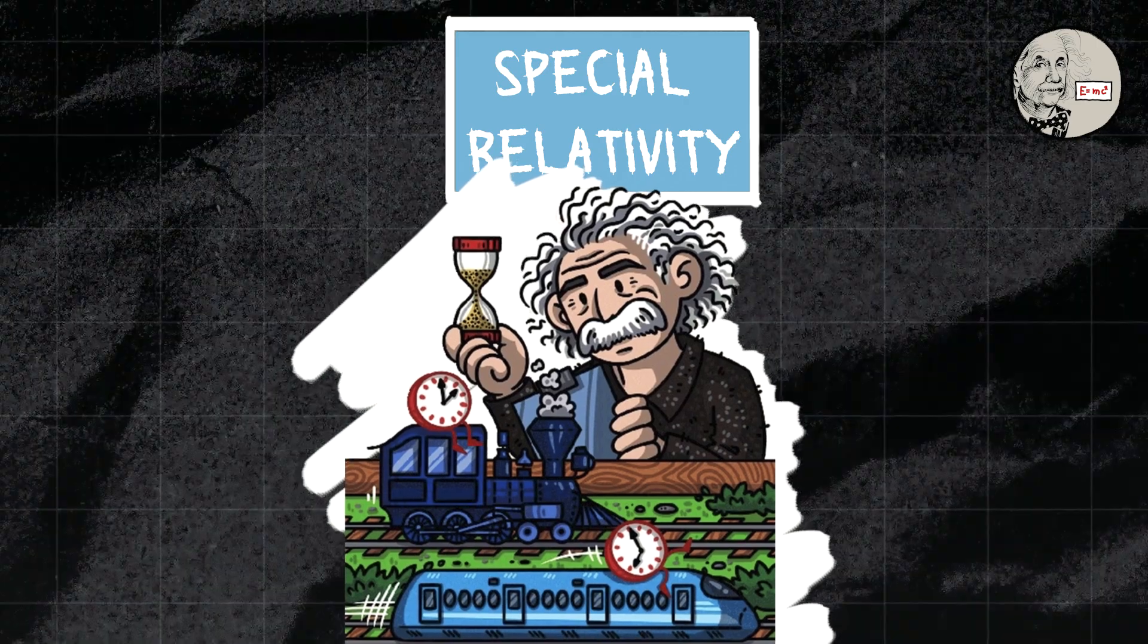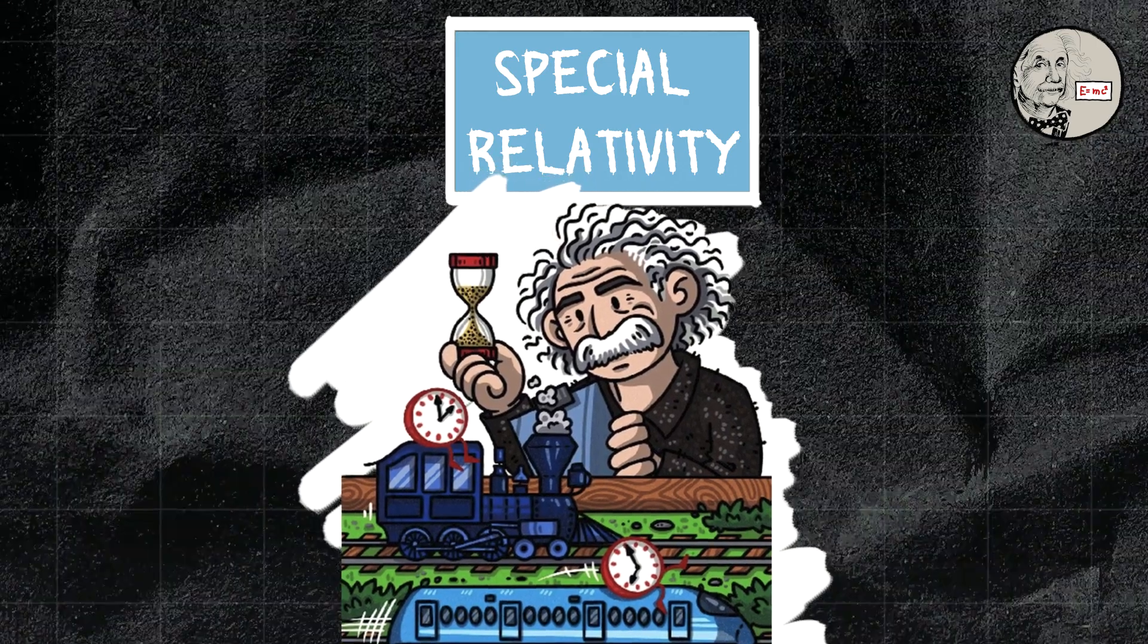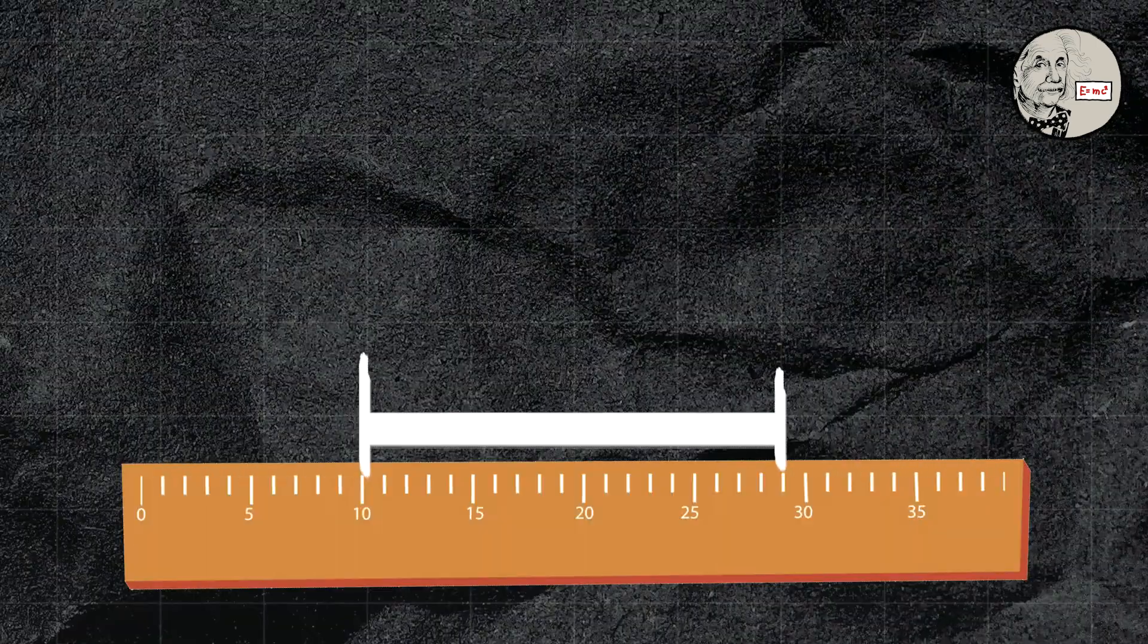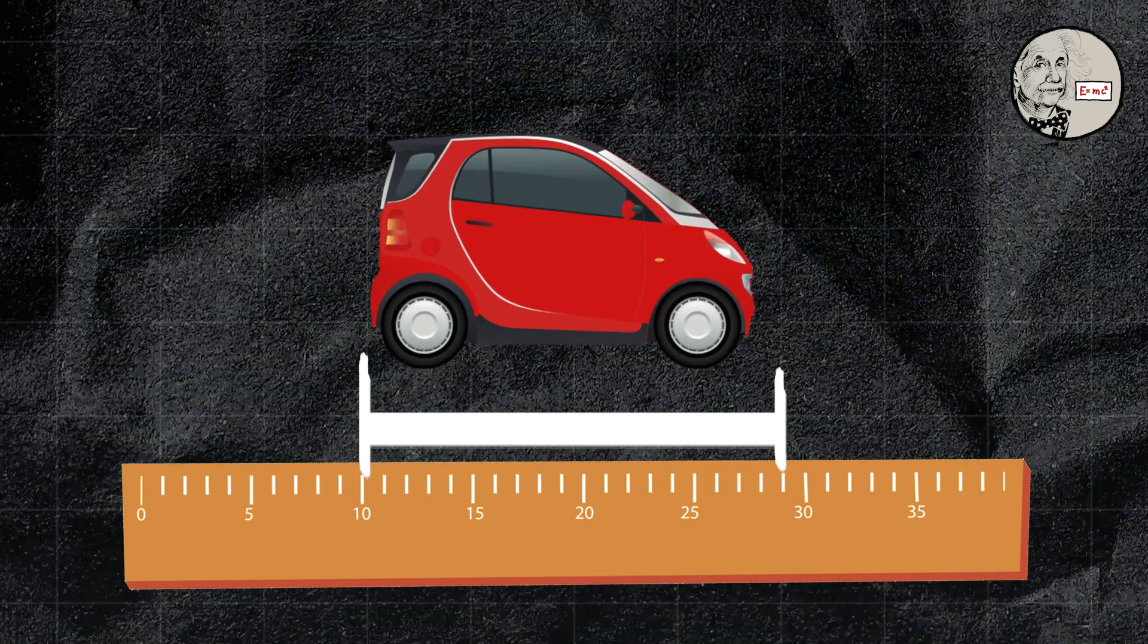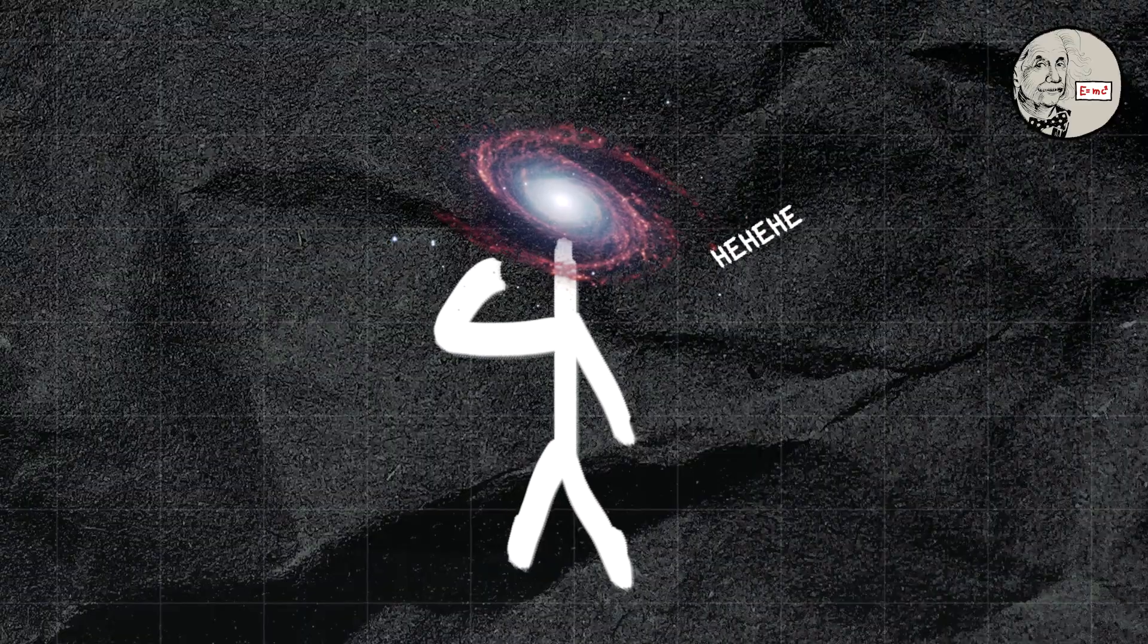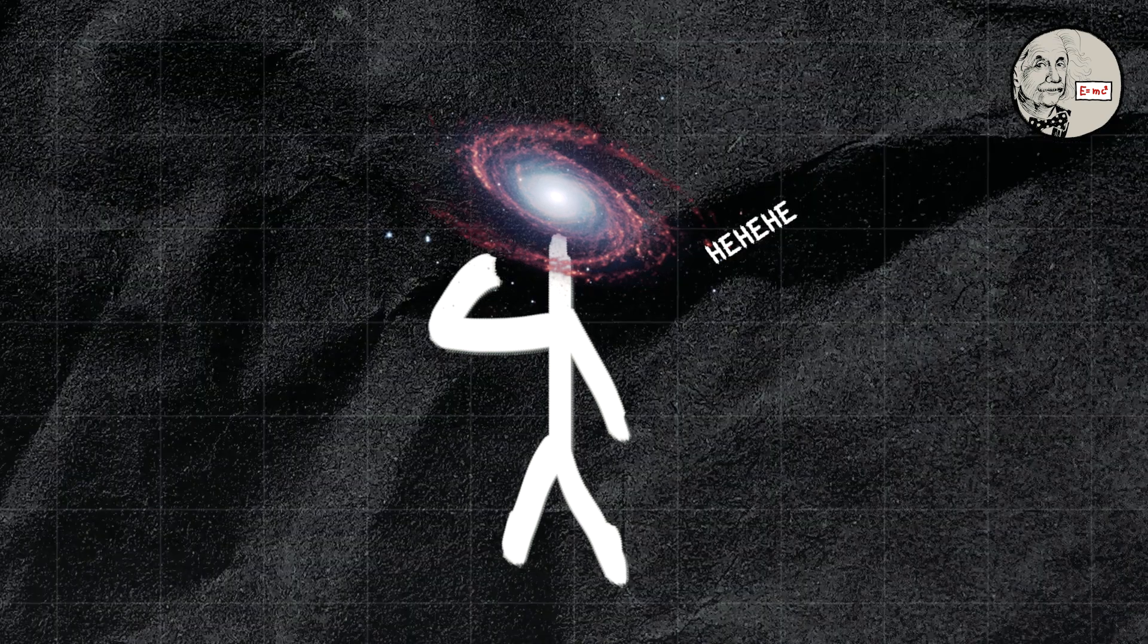Moving clocks actually tick slower than stationary ones, and length contraction: objects in motion appear shorter in the direction they're moving. It's like the universe itself is playing tricks on us.